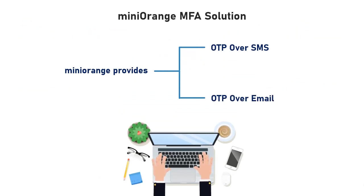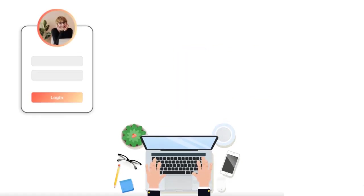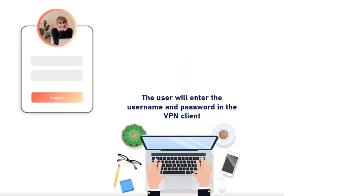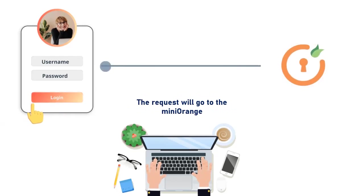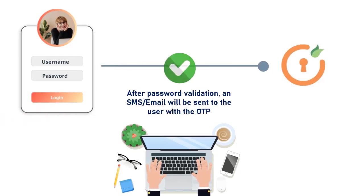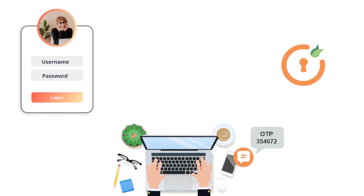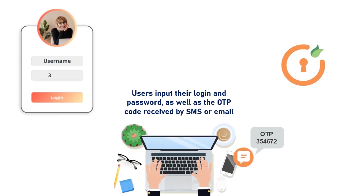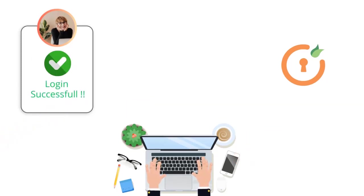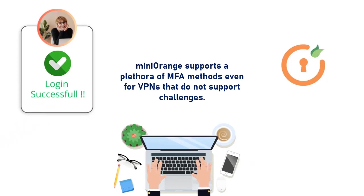For this, the user will be authenticated in two steps. The user will enter the username and password in the VPN client. The request will go to miniOrange, and after password validation, an SMS or email will be sent to the user with the OTP. The user must then input their login, password, as well as the OTP code received by SMS or email. In this way, miniOrange supports a plethora of MFA methods even for VPNs that do not support challenge.